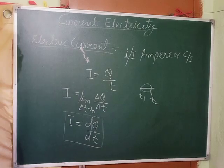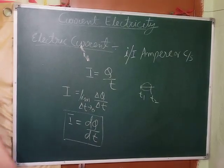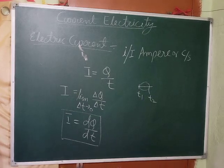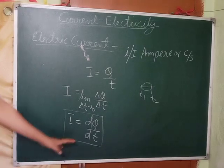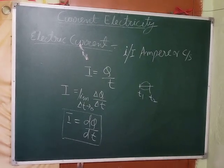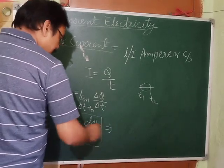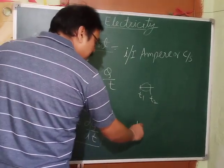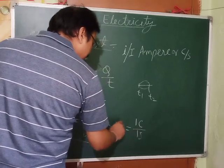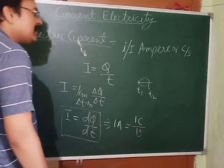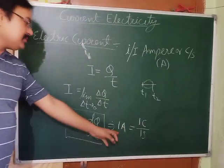The rate of flow of charge through a particular cross section of a conductor is called current. From the formula, when charge is 1 coulomb and time is 1 second, then current is 1 ampere. Ampere is denoted by A.